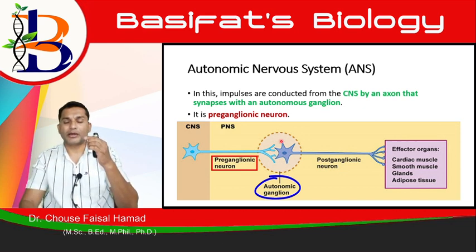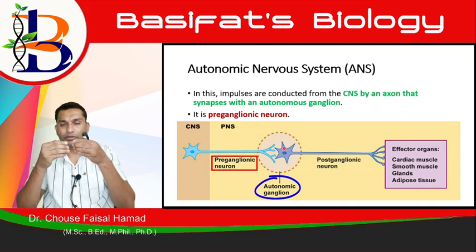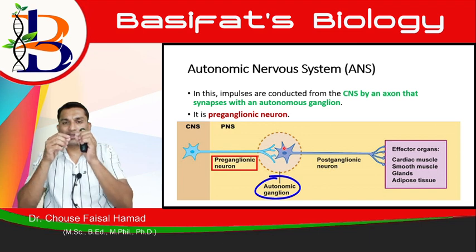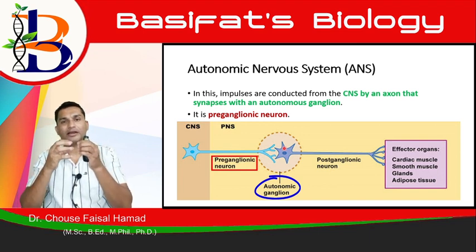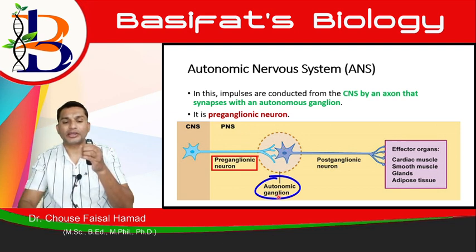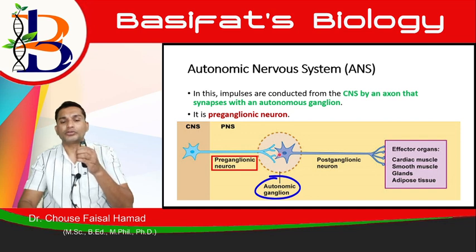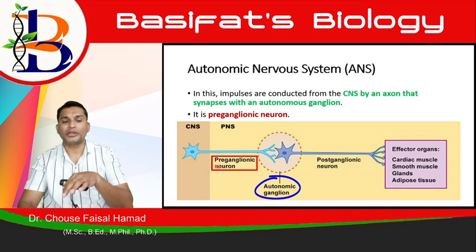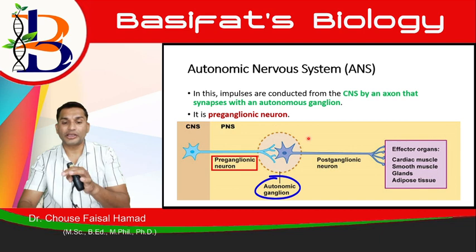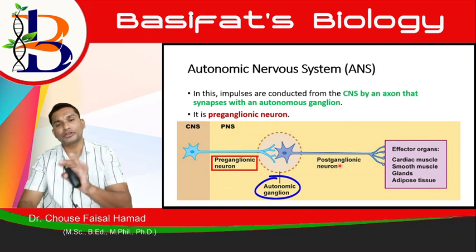The place where two neurons connect, held together by connective tissues and glial cells, is called a ganglion. The ganglion is indicated by the dotted region. The first neuron before the ganglion is the pre-ganglionic neuron. Two key terms to remember: pre and post.